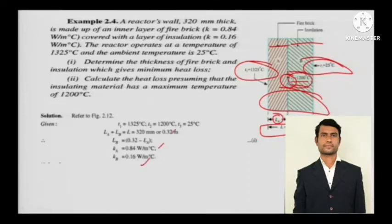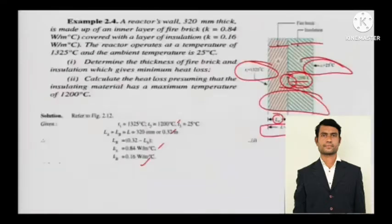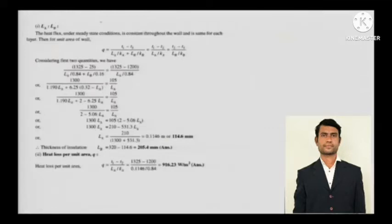All the given information is set. Since heat is steady, the heat entering from one face will exit with the same magnitude. So Q equals (T1 minus T3) divided by (LA/KA plus LB/KB), and this will also equal (T1 minus T2) divided by (LA/KA), and similarly (T2 minus T3) divided by (LB/KB), because it is steady state.